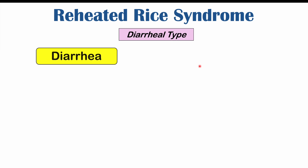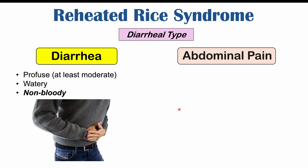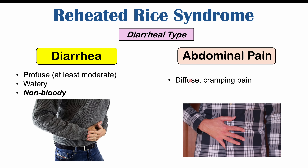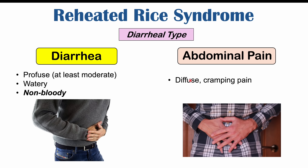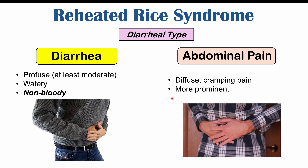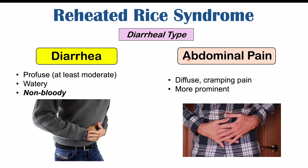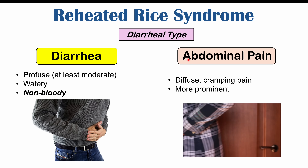Moving on to the diarrheal type. With the diarrheal type, we're going to have diarrhea — often profuse or at least moderate in intensity. It's going to be watery diarrhea and non-bloody. That's going to be key with regards to Bacillus cereus infections: watery, non-bloody diarrhea. We can also see abdominal pain, which is going to be more diffuse and generalized compared to the emetic type, cramping in nature, and more prominent and severe. These signs and symptoms have an onset within six to 18 hours of consumption of the food.